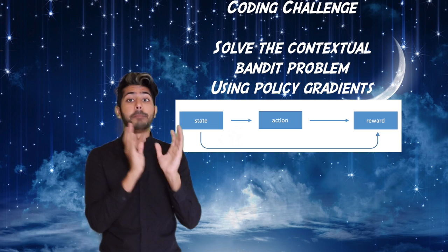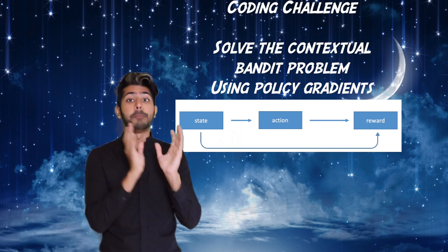The coding challenge for this week is to use policy gradients to solve the contextual bandit problem, so state is taken into account. Details are in the readme, github links go in the comments, and winners are going to be announced next week. Please subscribe, and for now, I've got to maximize my arm size. Thanks for watching.